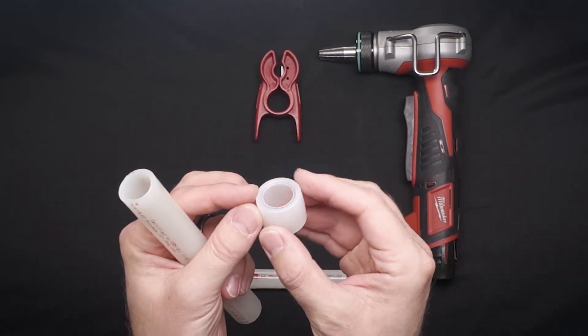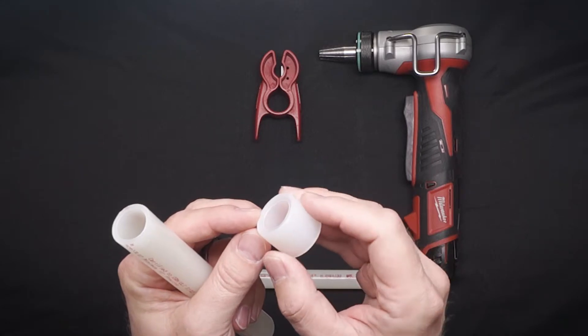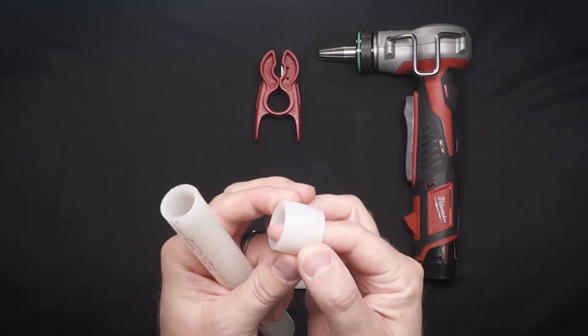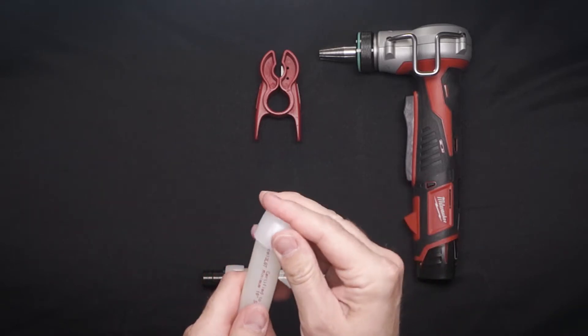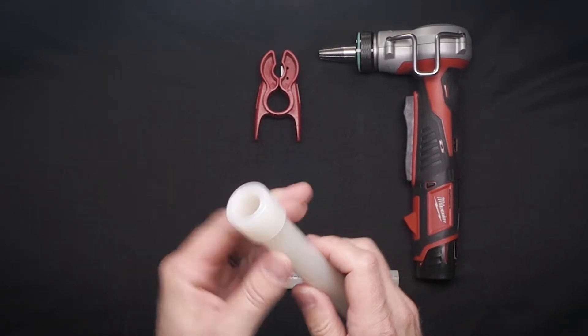Next, insert the tubing into the PEX ring. You'll notice that the ring has a 360 degree stop on one side that ensures proper placement on the tubing. Make sure the tubing is fully inserted into the PEX ring.